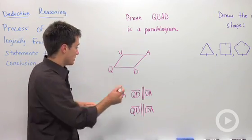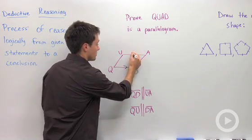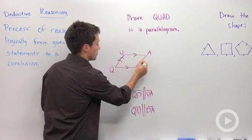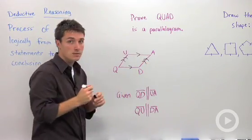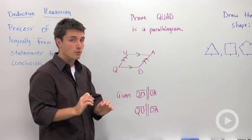So if I just mark these—QD parallel to UA and QU parallel to AD—the process you would use, a proof,